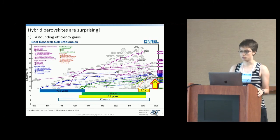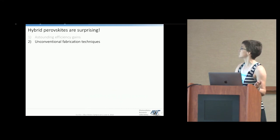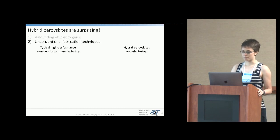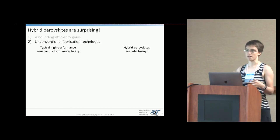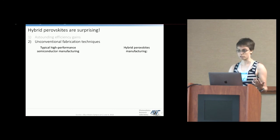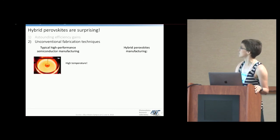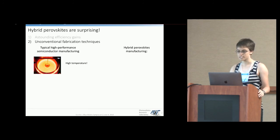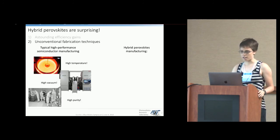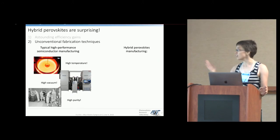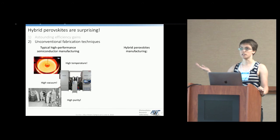And that's largely related to their unconventional fabrication techniques. So they're made in a really unusual way compared to conventional semiconductor fabrication. If we look at typical manufacturing processes for the types of high-performance semiconductors that you need for solar cells, they tend to be high-temperature processes. So this is a photo of a Czochralski silicon furnace. They're very high vacuum and they require really high purity, so you need expensive clean room facilities. And all of this means that making these materials is very expensive and also very energy intensive.